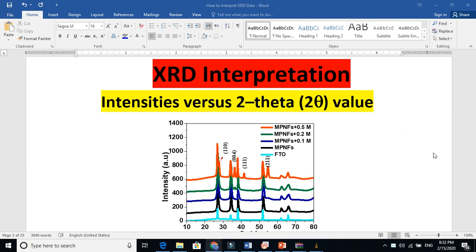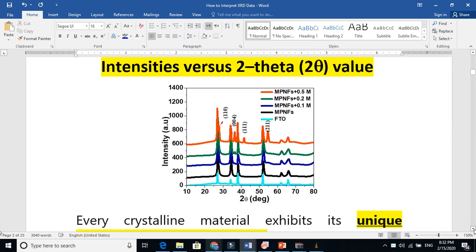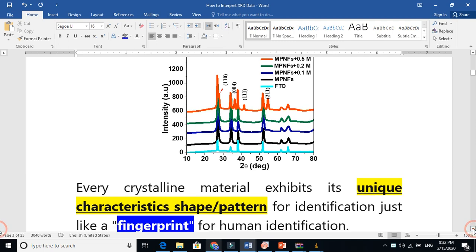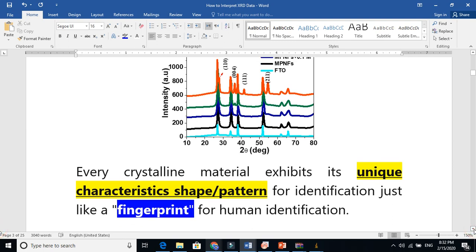XRD is the basic characterization of your material and this is the graph between intensity versus 2 theta. Every crystalline material exhibits its unique properties, unique shape and pattern for its identification.